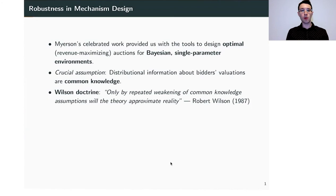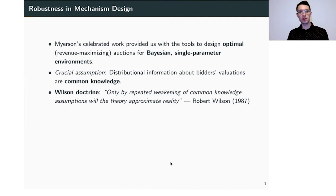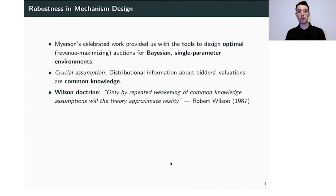A well-studied problem in mechanism design is that of designing a revenue-maximizing auction. In particular, in a single-parameter environment, Myerson has given us an elegant characterization of that optimal auction. But a crucial assumption it makes is that the auction designer has accurate distributional information about where the bidders' valuations are coming from. And this is not always true.